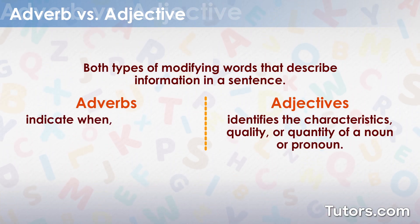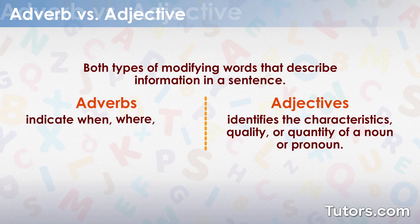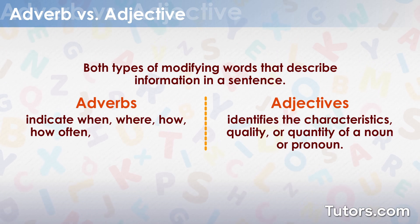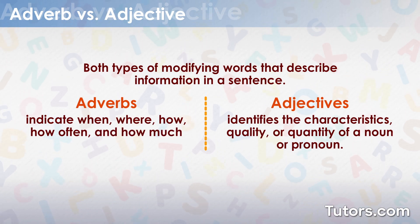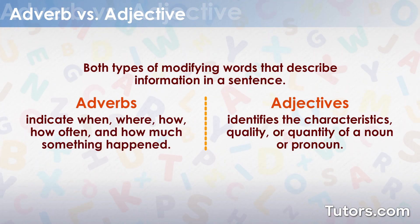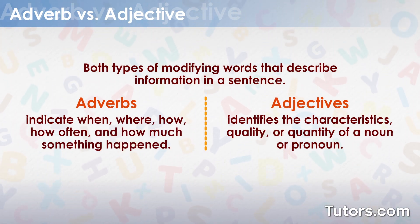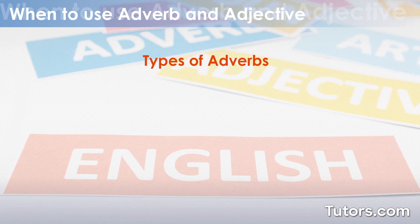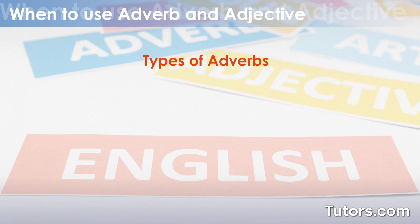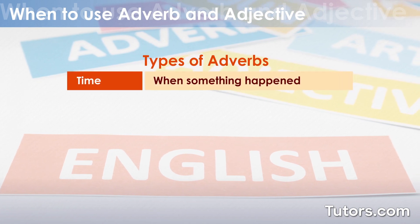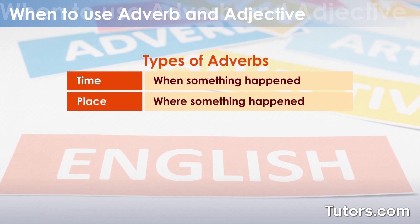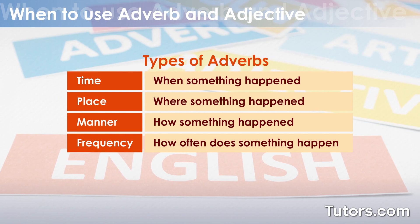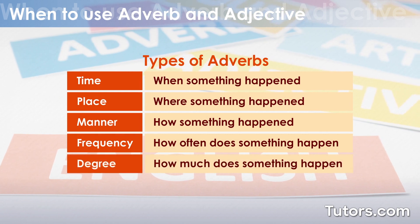Adverbs indicate when, where, how, how often, and how much something happened. There are several types of adverbs: time, place, manner, frequency, and degree.